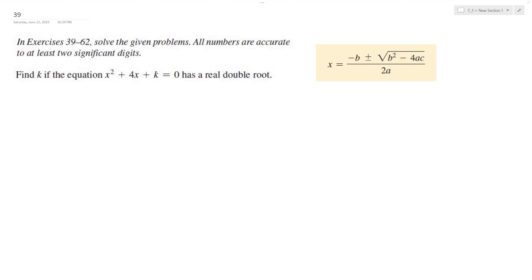All right, so let's solve the following problem. We want to find k if the equation x squared plus 4x plus k equals 0 has a double root. That just means that it'll have the same number, and if it's a parabola, it'll just touch the x-axis once.